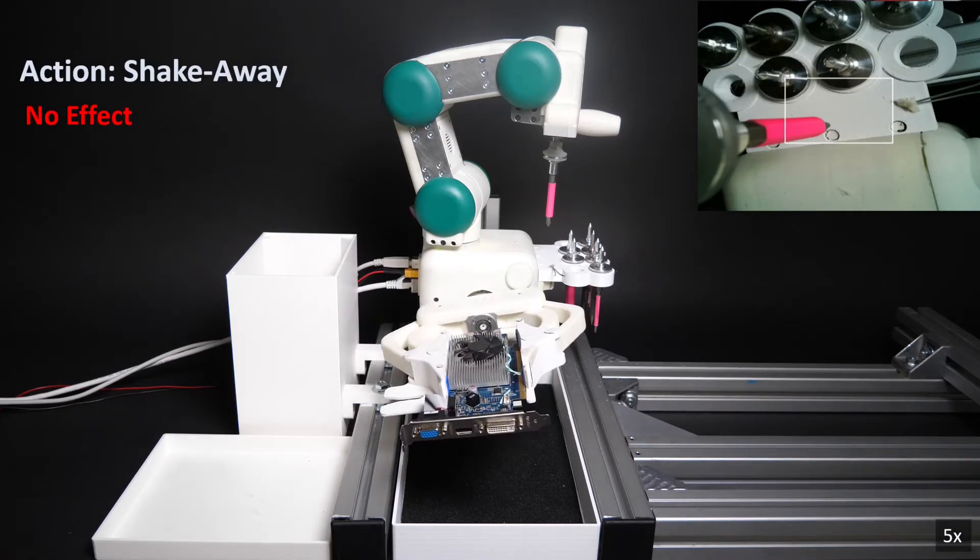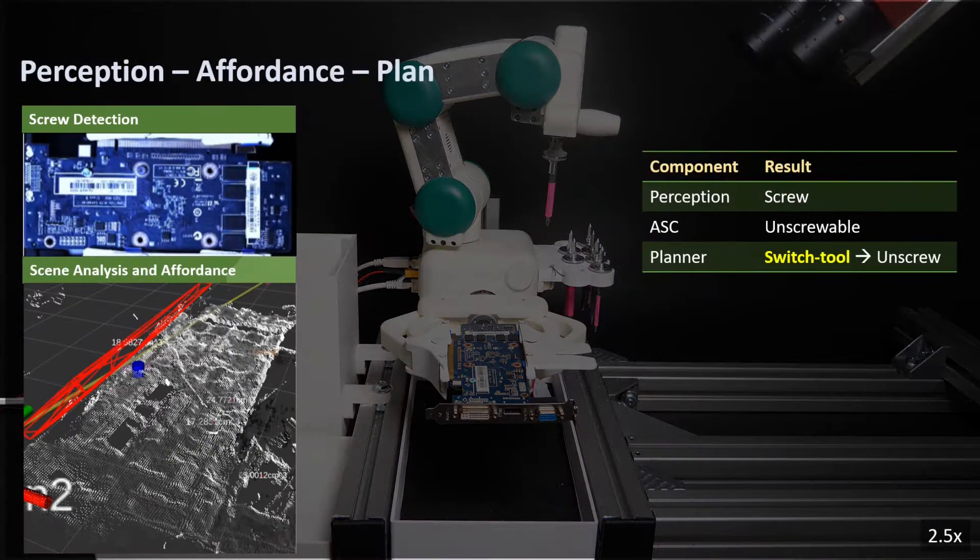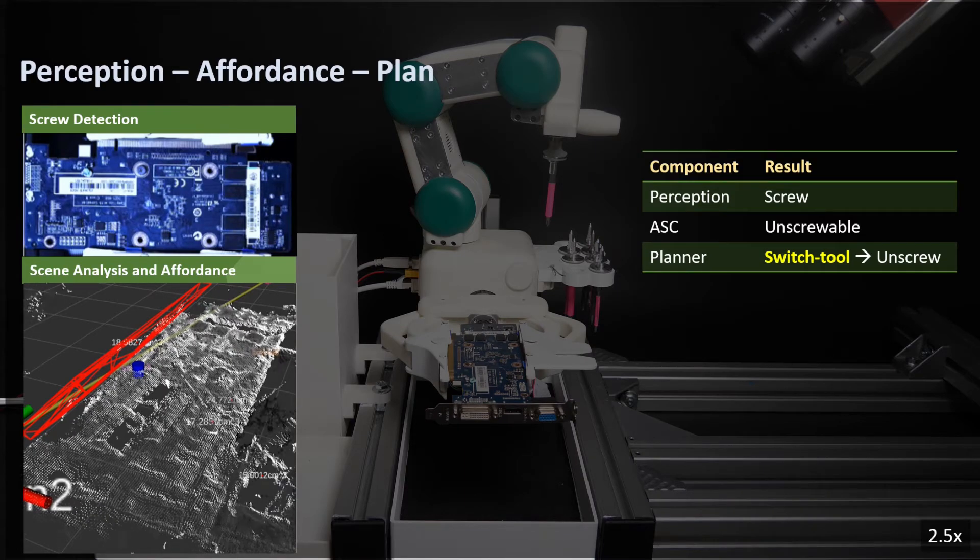The robot fails the first unscrew attempt. The planner gives the suggestion to repeat it.